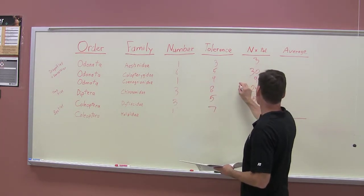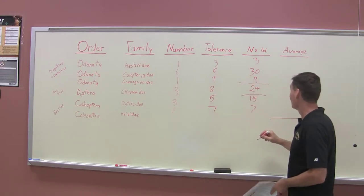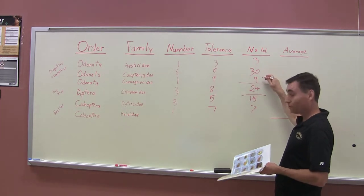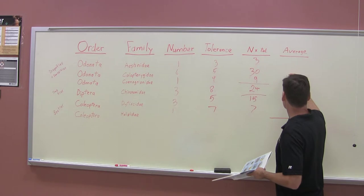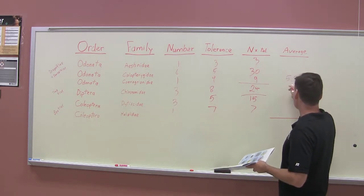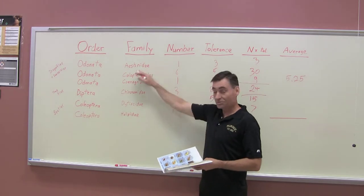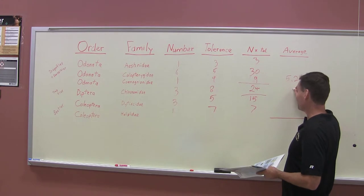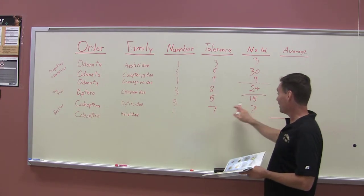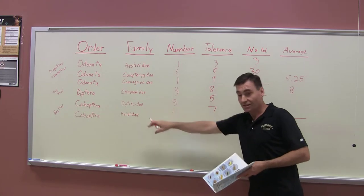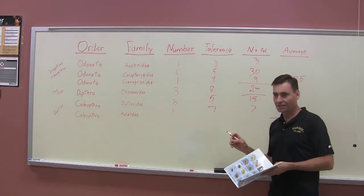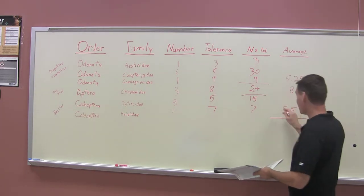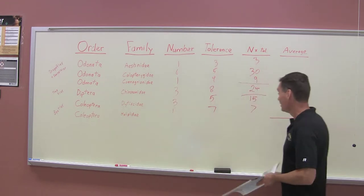The average of these - we caught eight individuals totaling forty-two, I'm cheating - is 5.25. That's the average tolerance of all the damselflies and dragonflies. The average tolerance of our true flies is eight, and the average of our beetles, the predacious diving and the Gyrinidae, is 5.5.